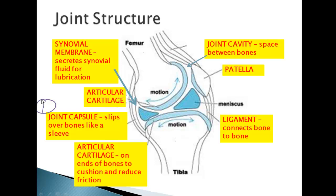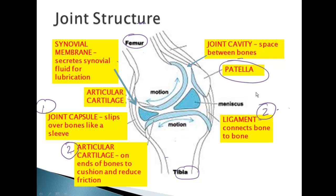The next thing would be the bones in the joint — in this case, the femur, the tibia, and the patella. On the ends of those bones, there's articular cartilage, which is a safety feature to keep bone from grinding on bone. We also have ligaments in those joints to connect bone to bone. The more motion you have in a joint, the more ligaments that have to be there to connect all those moving parts together.